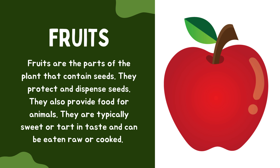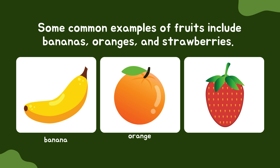Fruits. Fruits are the parts of the plant that contain seeds. They protect and disperse seeds. They also provide food for animals. They are typically sweet or tart in taste and can be eaten raw or cooked. Some common examples of fruits include bananas, oranges and strawberries.